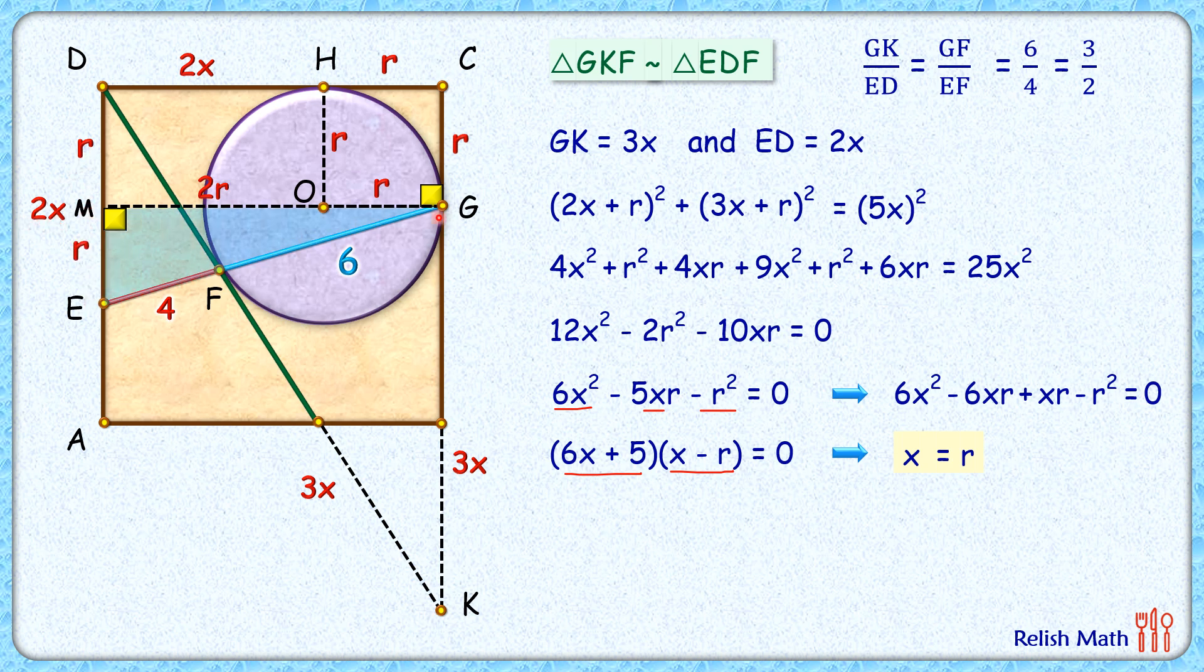Now in this blue right-angle triangle, let's apply Pythagorean theorem. We get (2r + r)² + r², that's (3r)² + r², equals hypotenuse squared or 10². Simplifying, we get 10r² = 100, or r² = 10.